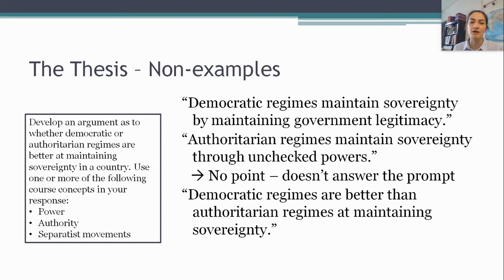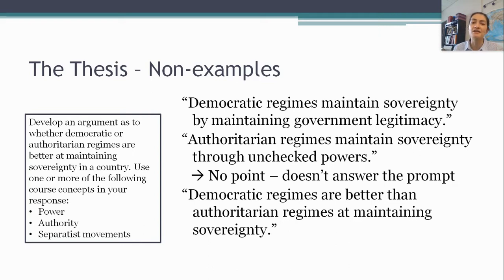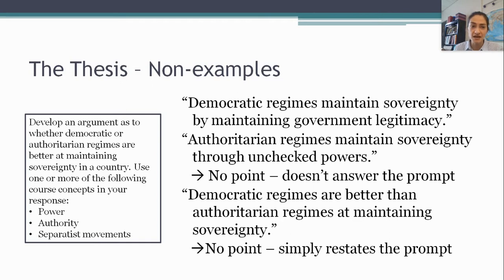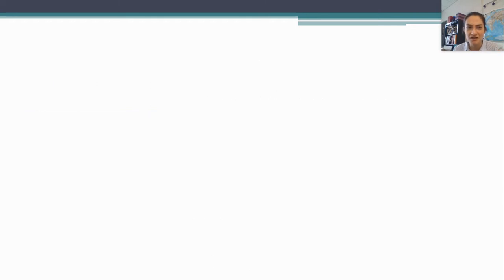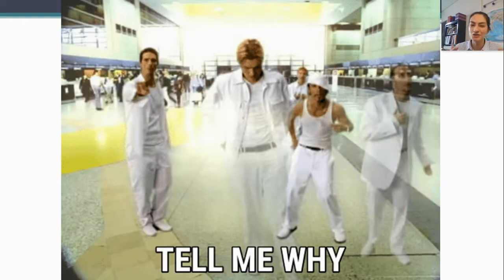One other thing I might write: 'Democratic regimes are better than authoritarian regimes at maintaining sovereignty.' I listened to my previous advice and answered the prompt directly, but I'm still not going to get the thesis point because I have not established a line of reasoning — I have simply restated the prompt. I almost always have to use the word 'because.' You have to follow the advice of the Backstreet Boys and tell me why. You must explain to your reader why you are going to take the position you take. You can't just pick one or the other; it's not a multiple choice question.